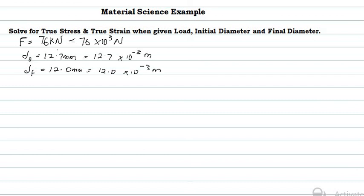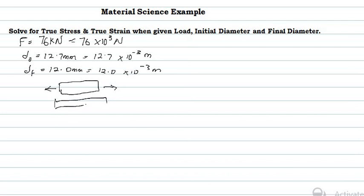By looking at these values, you can see that the area actually reduced, meaning the length increased — the material was put in tension. As depicted in the previous video, if you put a rod in tension and draw it in both directions, the length will increase but the area will decrease.